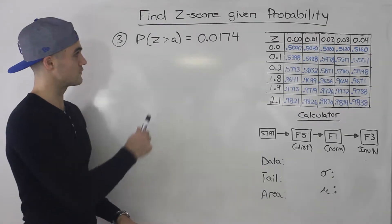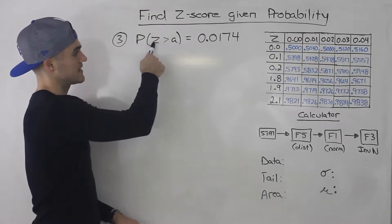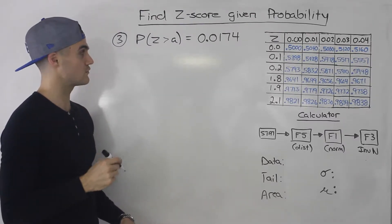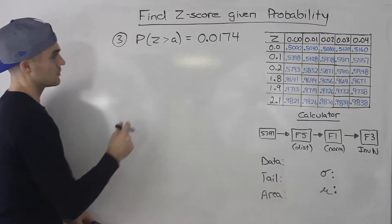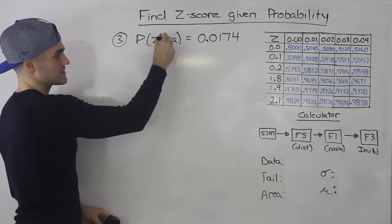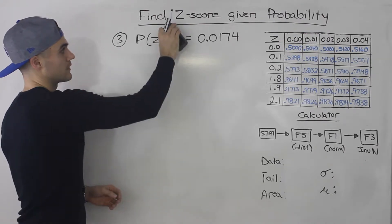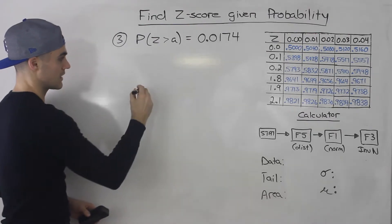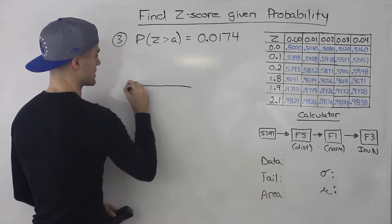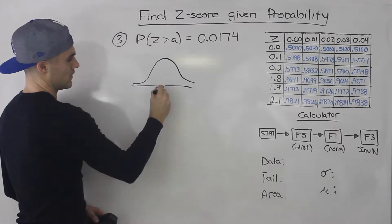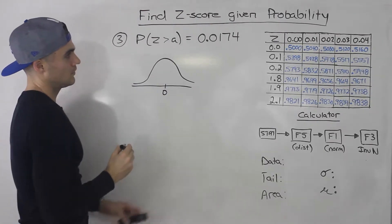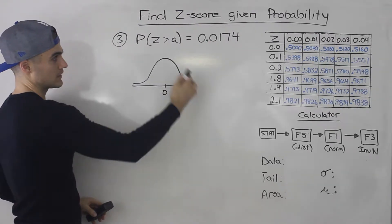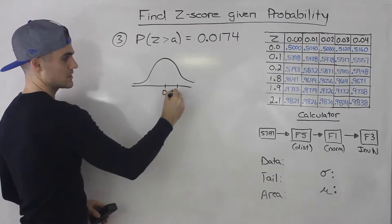Moving on to the third example, we have to find the probability that z is greater than some z-score, equal to 0.0174. So we're looking for that z-score. Notice here the switch from less than to greater than. This probability that we are given is going to be a right-tailed probability. If we draw this out with zero in the middle, notice that this probability is less than 0.5. Because we're looking for a right-tailed probability, that means the a-value is going to be positive.